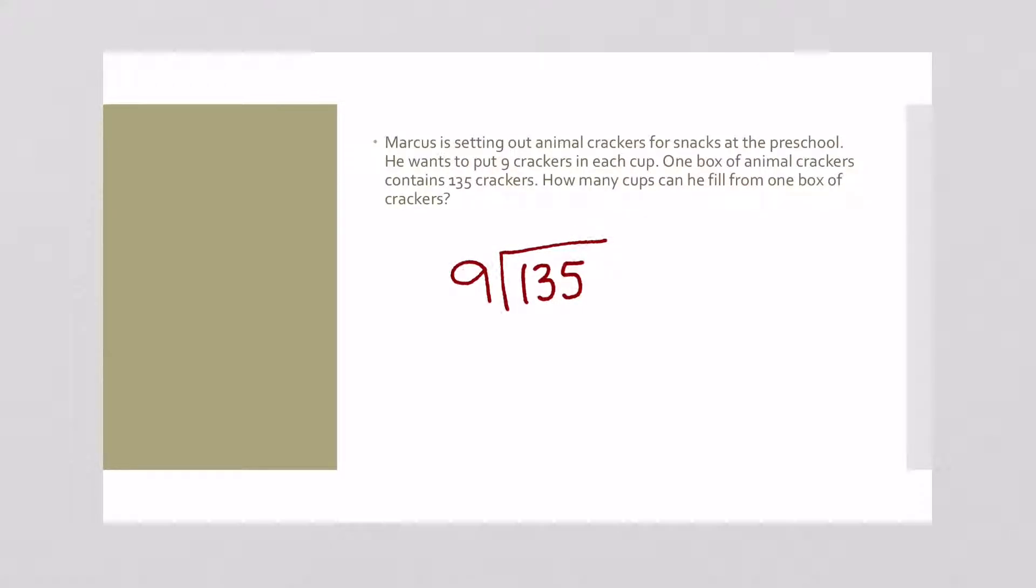9 won't go into 1 but it will go into 13 one time. 1 times 9 is 9. Subtract. 13 minus 9 is 4. Bring down that 5. 9 will go into 45 five times. So our answer is 15 with no remainder. But what does 15 mean? It says right here, how many cups? Always look back at your question, how many cups? So he can fill 15 cups.